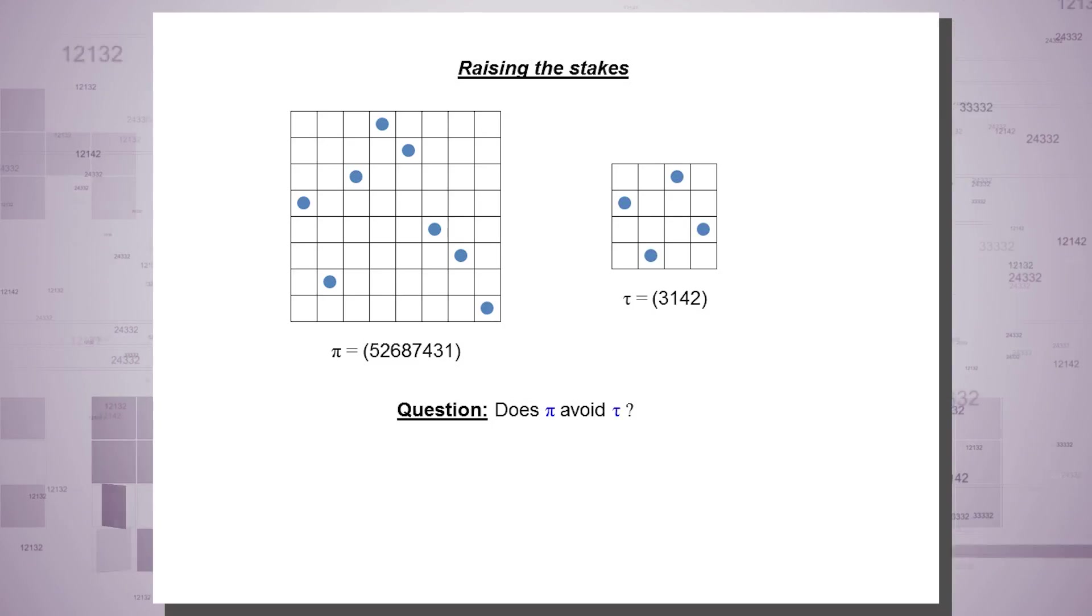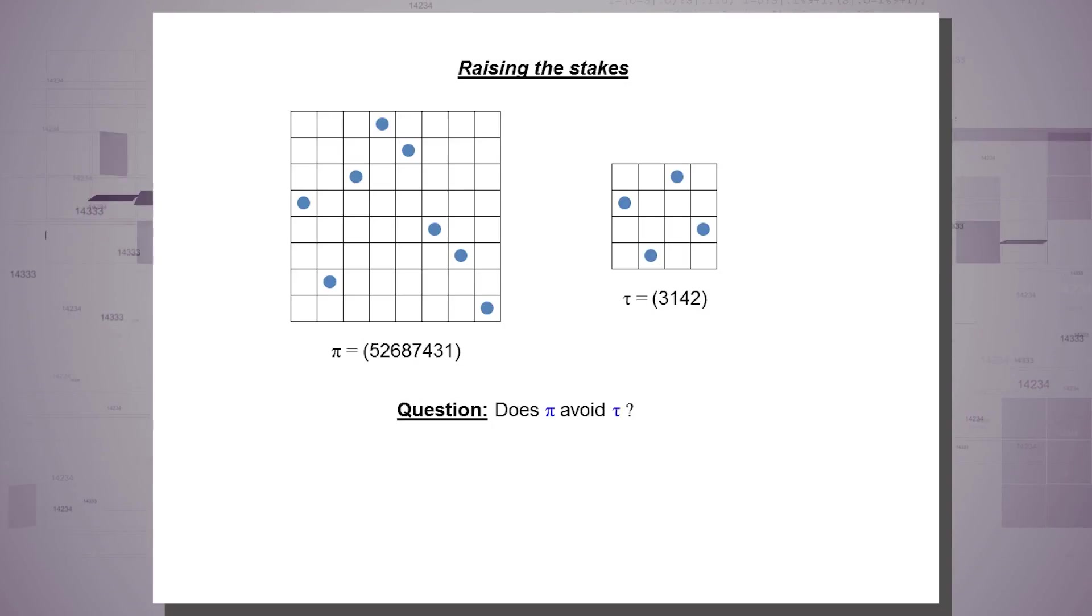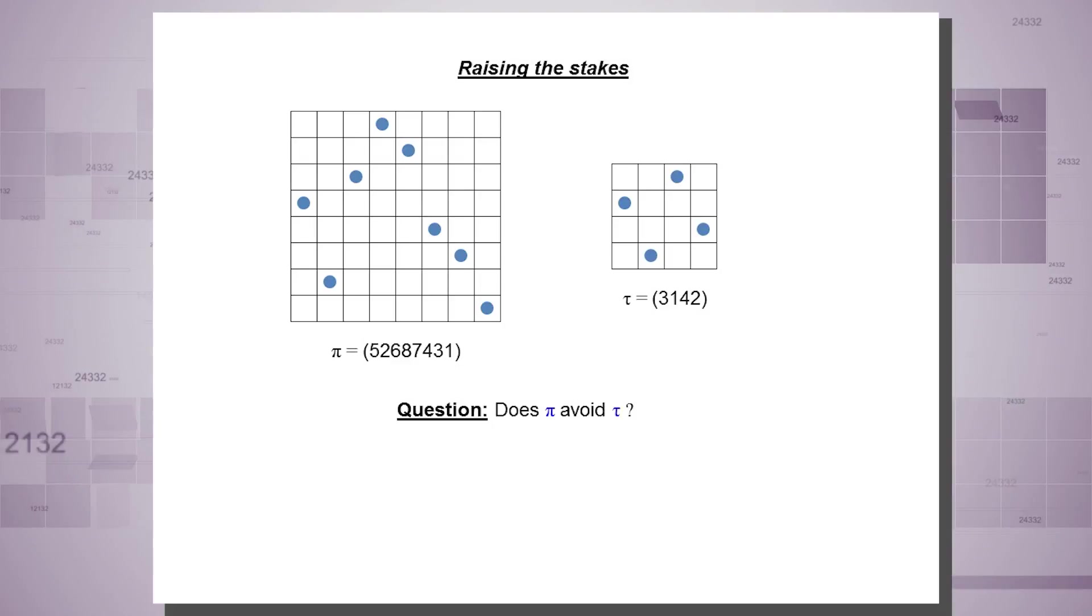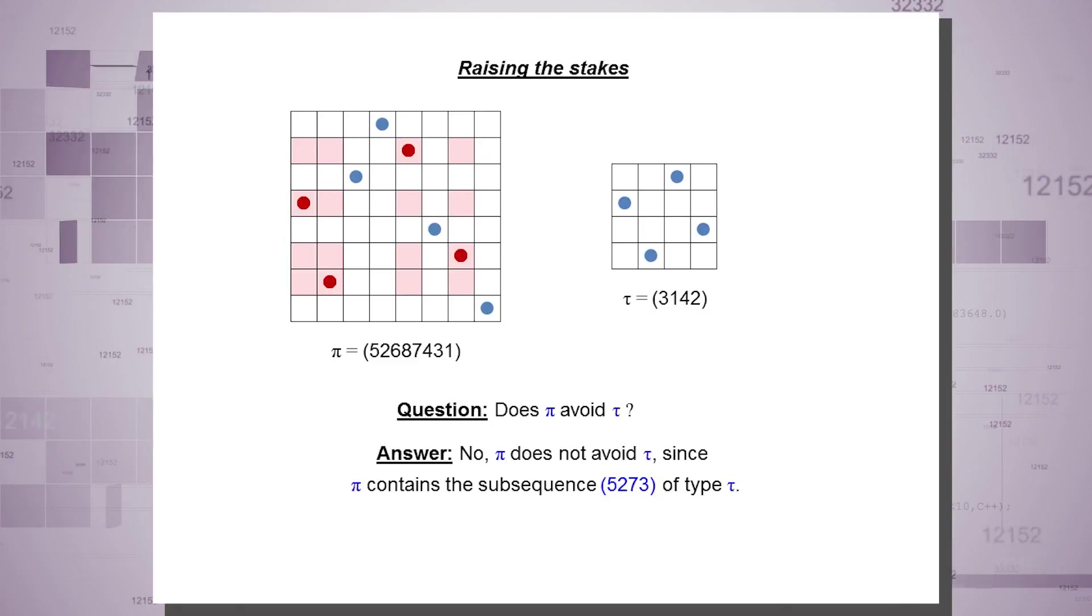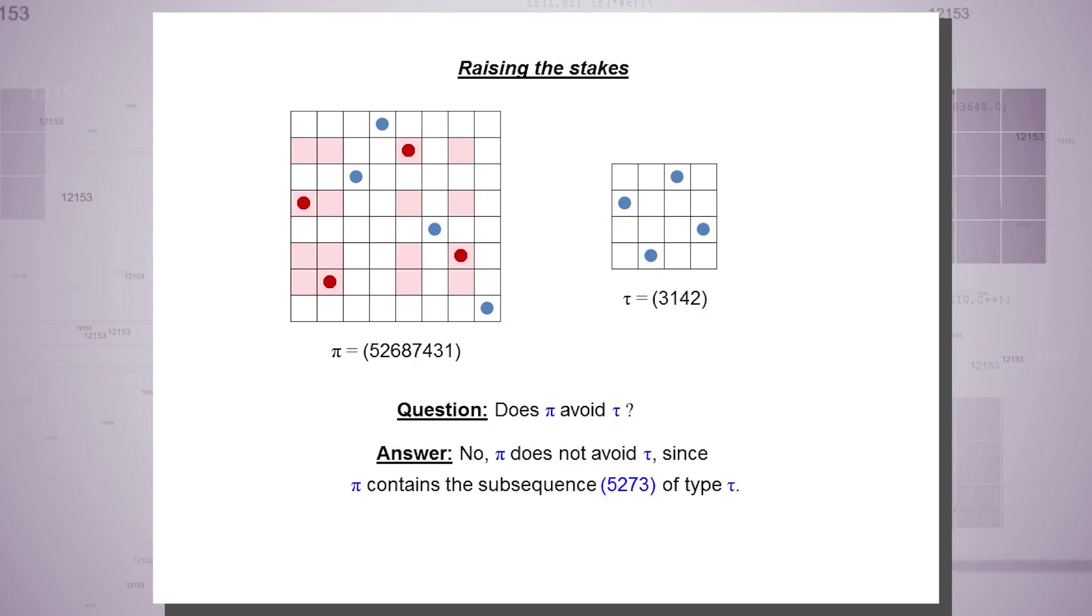Raising the stakes now from a permutation of length 3, we go to a permutation of length 8. This is an actual chess board, 8 by 8. And we have the permutation 5, 2, 6, 8, 7, 4, 3, 1. Now that's the large permutation. I'm going to give you a smaller one, this squarish permutation, 3, 1, 4, 2. And I will ask you, does the big permutation avoid the small one? The answer here is no, because I can pick four dots in the original permutation. I can mark their rows and columns. And I can gradually transform them into the smaller matrix without changing who is larger, who is smaller. So the answer here is no. The larger permutation does not avoid the smaller one, because it contains a sub-pattern 5, 2, 7, 3, which is of the same type as the small one.